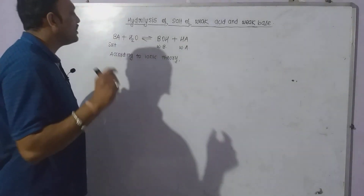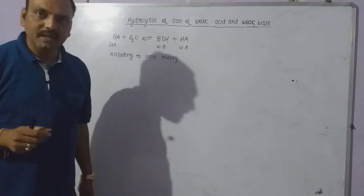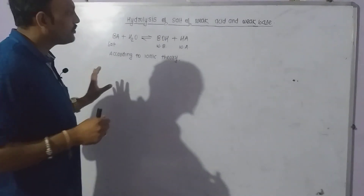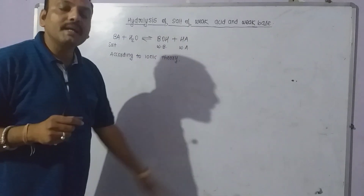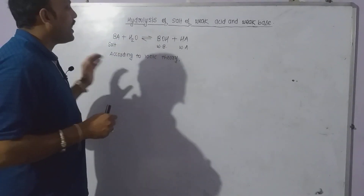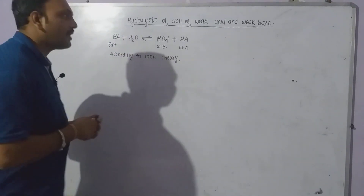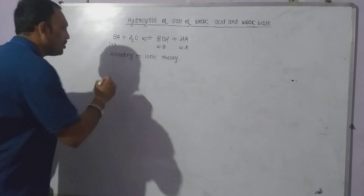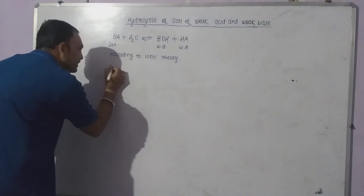When this salt — the salt of weak acid and weak base — is dissolved in water, it shows the following equilibrium. In this equilibrium, both base BOH and acid HA are weaker ones. According to ionic theory, the ionic reaction for this equilibrium can be given as follows. Salt is always a strong electrolyte, so it can be written into ions as it is completely dissociated.